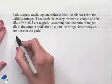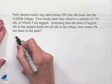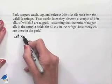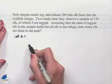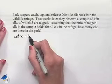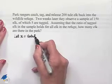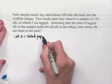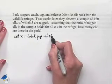We begin by designating our variable X. Here, we want to let X equal the unknown value that we're trying to find, and that would be the total number of elk — the total population of elk that we have in the park.